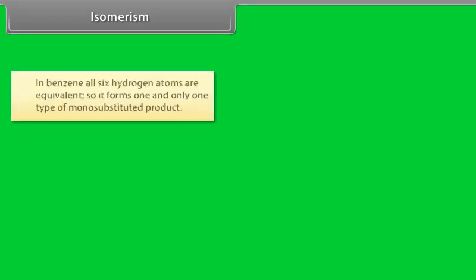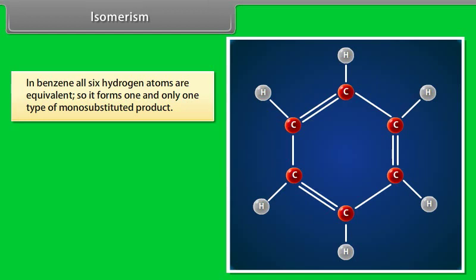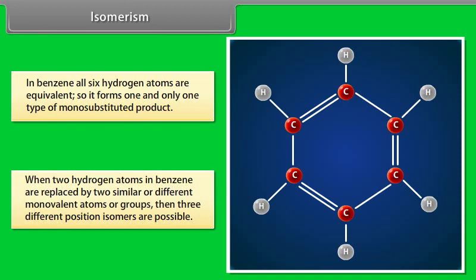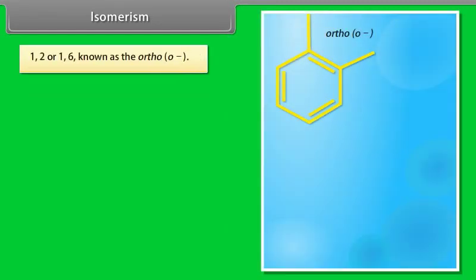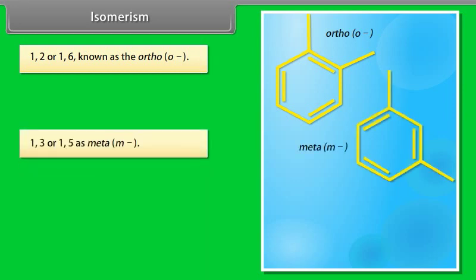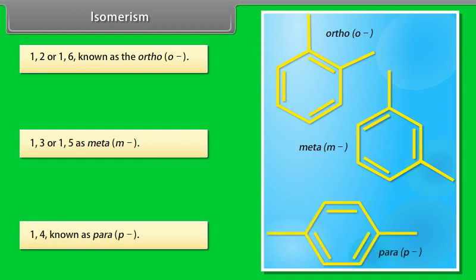Isomerism. In benzene, all six hydrogen atoms are equivalent. So, it forms one and only one type of monosubstituted product. When two hydrogen atoms in benzene are replaced by two similar or different monovalent atoms or groups, then three different position isomers are possible. First one is 1,2 or 1,6, known as ortho. Second one is 1,3 or 1,5, as meta. And the third one is 1,4, known as para dye-substituted compounds.